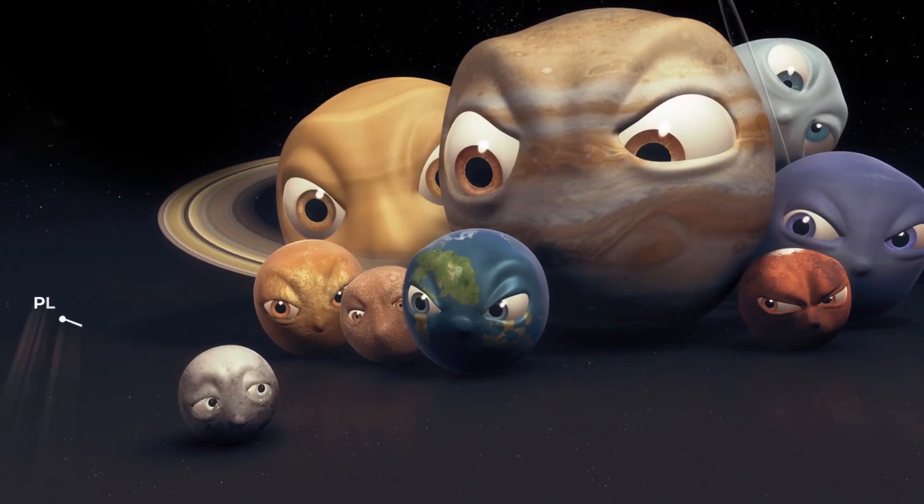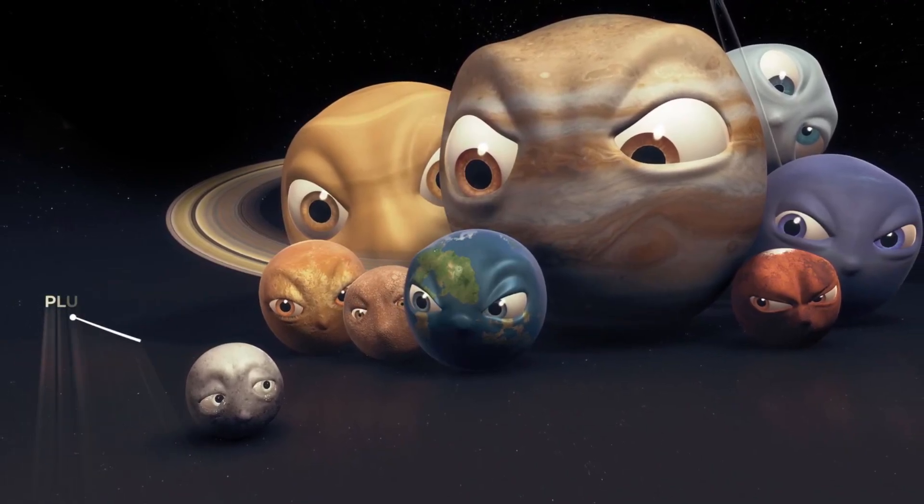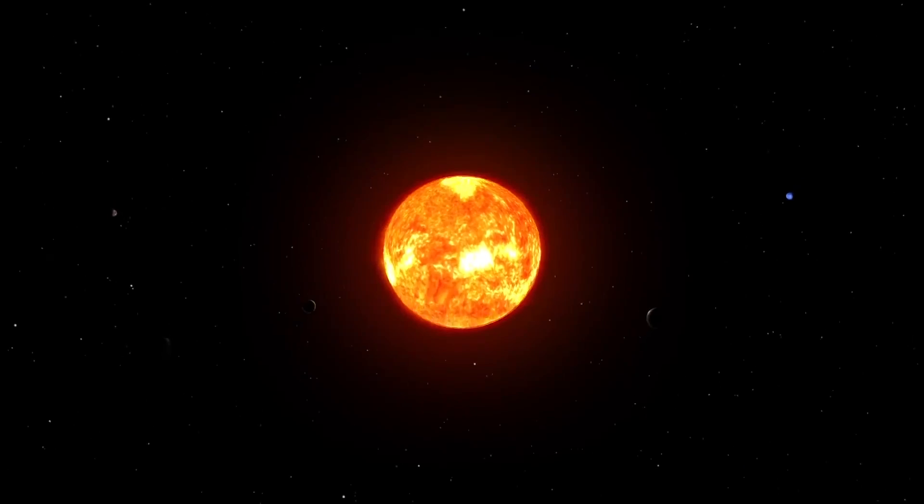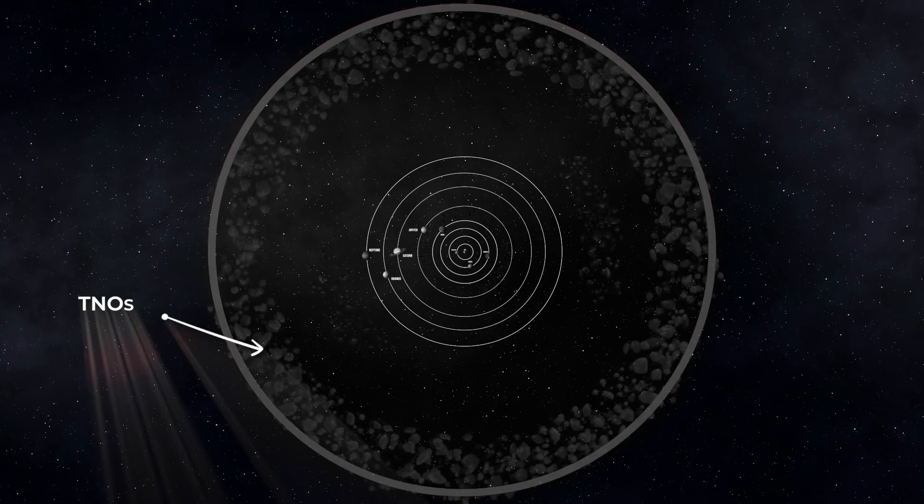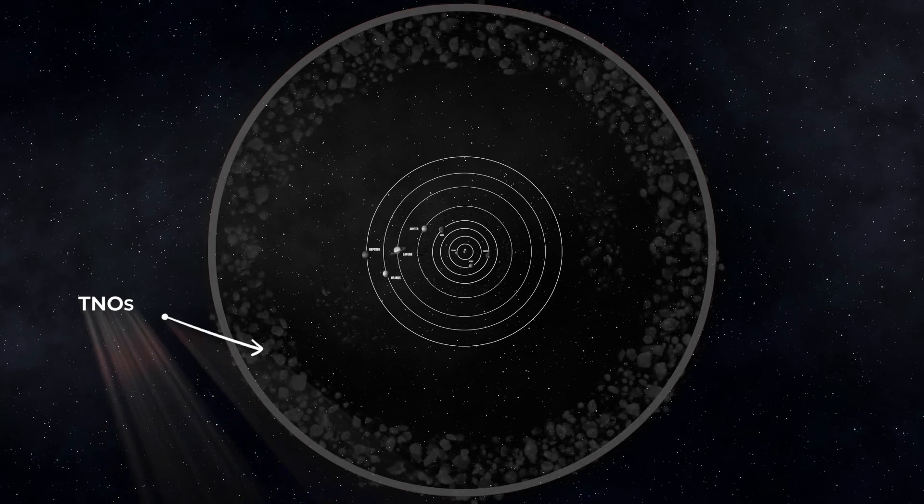far beyond the orbits of the other planets, including the dwarf planet Pluto, which orbits about 60 billion kilometers away from the Sun. Will the gravitational influence found in the study of TNOs show a similar location to this?